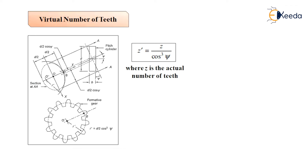The intersection of the plane AA, which is inclined to the base of the cylinder and the pitch cylinder, produces an ellipse. The ellipse is shown by a dotted line. The semi-major and semi-minor axes of the ellipse are given by d upon 2 cos psi and d by 2 respectively.